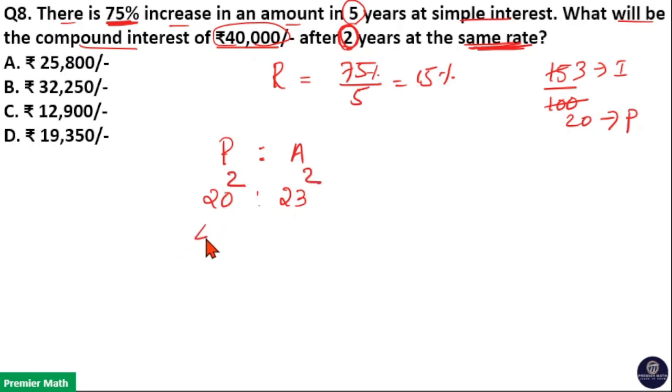Here 20 squared is equal to 400, and 23 squared: 3 squared is equal to 9, 2 times 3 times 2 is 12 remaining 1, 2 squared plus 1 is 5. So 400 to 529 is the principal and amount for 2 years.